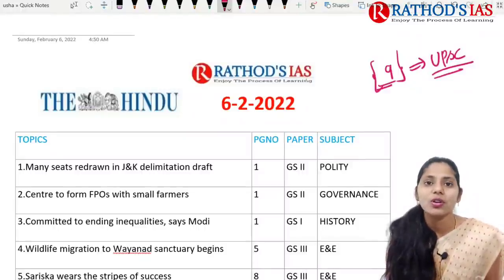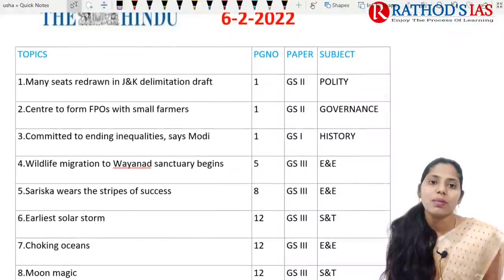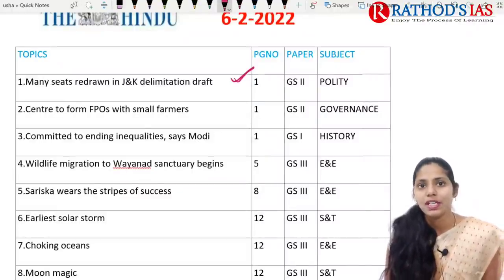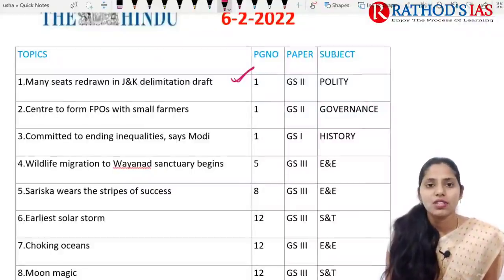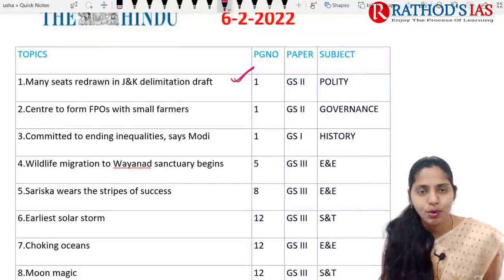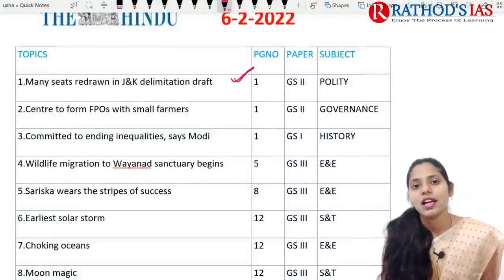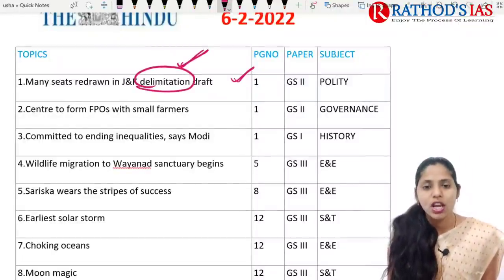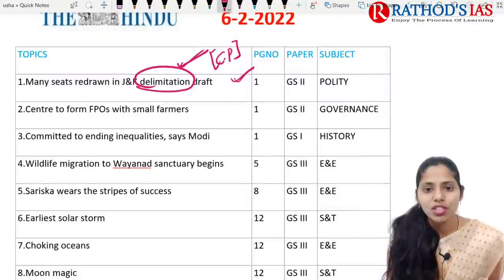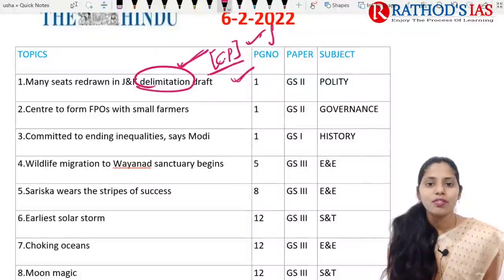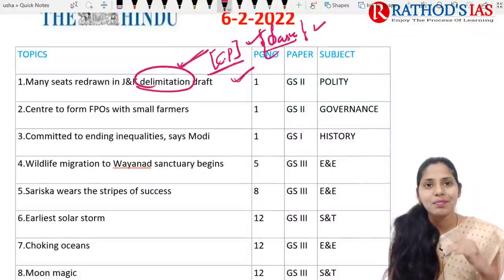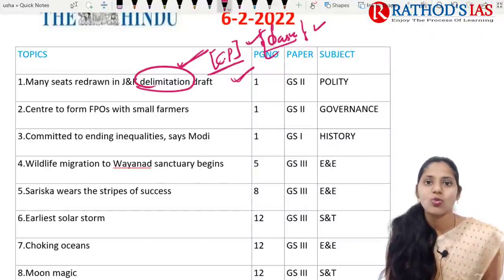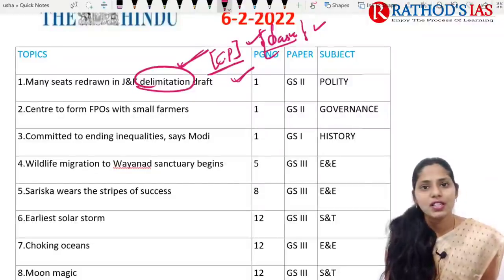Our first topic is about the Jammu and Kashmir delimitation draft. The final report of this delimitation commission came into picture, and the National Conference (NC) mainly opposed this report, saying it is unconstitutional. Here you need to focus on what is delimitation, what is the delimitation commission, and the constitutional provisions of delimitation.